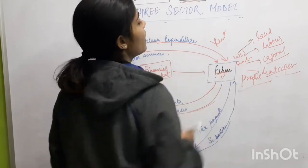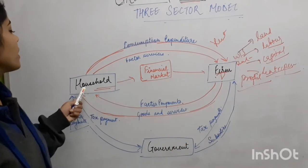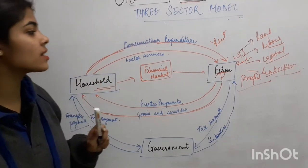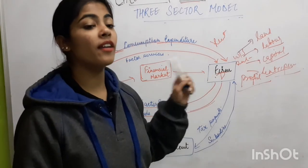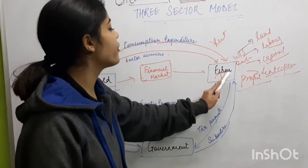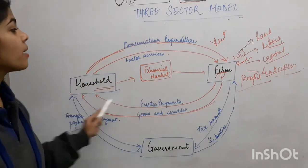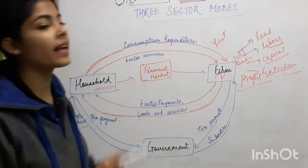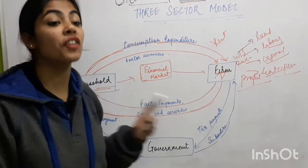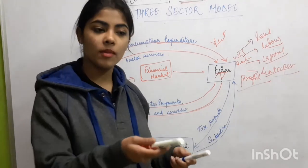In turn, from firm to household, the firm provides factor payments. The household provides factor services — land, labor, capital, and entrepreneur — and the firm pays factor payments: rent for land, wages and salaries for labor, interest for capital, and profit for the entrepreneur.